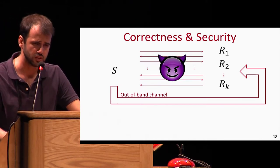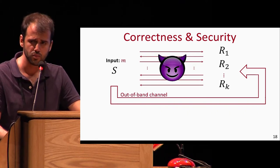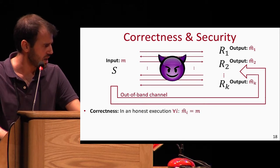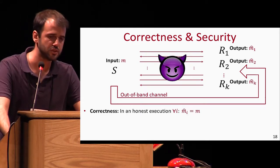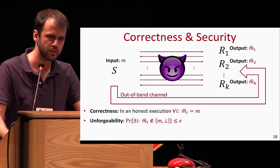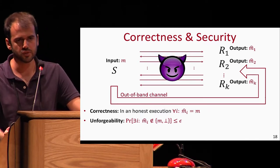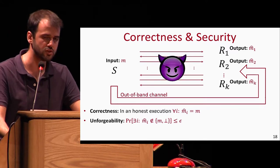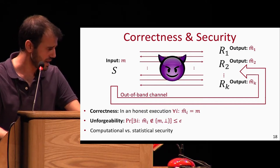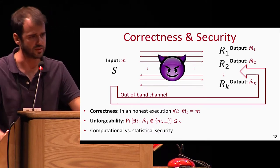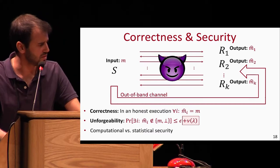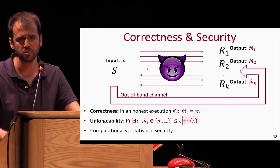Within this model we define correctness and security. S has input message M, and at the end of the protocol each receiver R_i outputs a message M-hat_i. The correctness requirement states that in an honest execution, all receivers must output the correct message M with probability one. For security (unforgeability), we require that the probability that there exists some receiver R_i outputting a fraudulent message — one that is neither M nor the rejection symbol — is bounded by a predetermined parameter epsilon. We consider both computational and statistical flavors, allowing negligible additive slack in the computational setting.